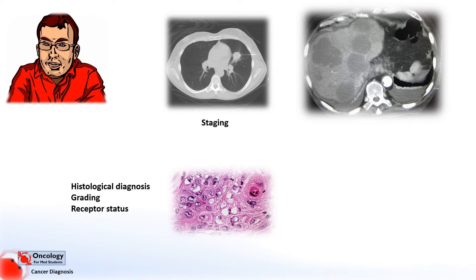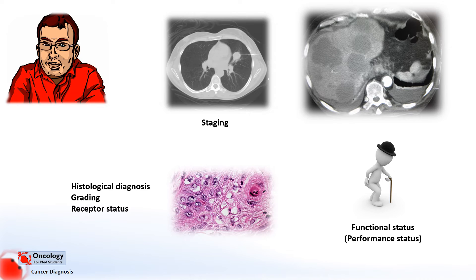Another thing that physicians have to consider is the functional status of the patient — are they well enough to go through with surgery, radiotherapy, or chemotherapy, or combinations of these different treatments? The functional status is often expressed in terms of something called the performance status, which is on a scale of zero to four, with four being the worst and zero being perfectly normally functioning.